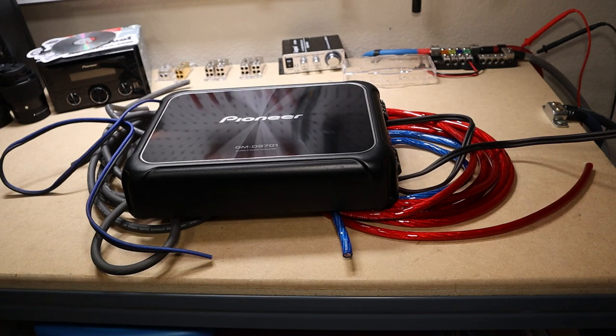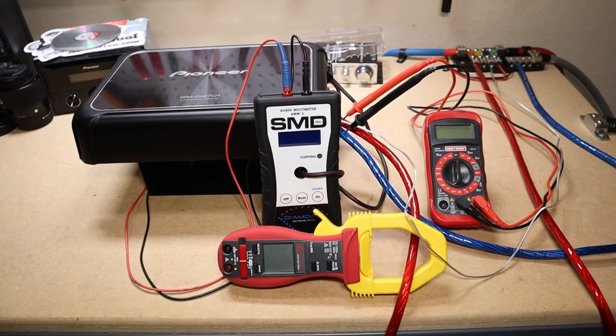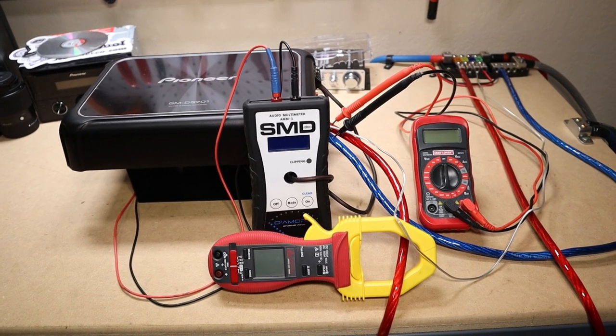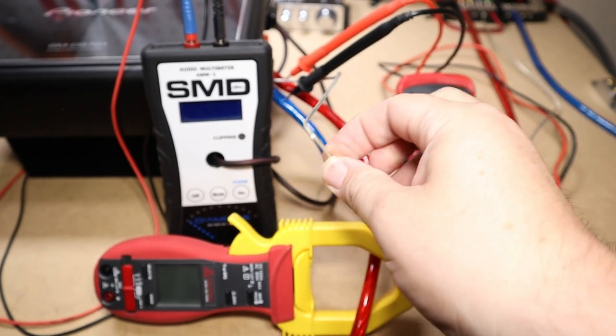Before we get into testing, I kind of want to run you guys through this setup. So everything here, outside of this wire right here which is the remote wire, is CCA. This is OFC, but that doesn't matter, that just turns it on.